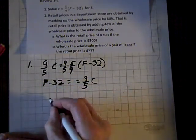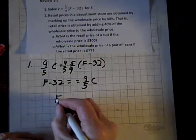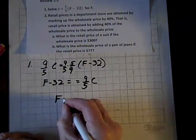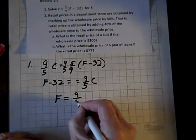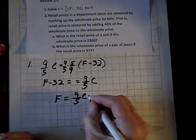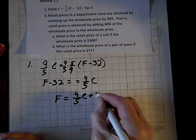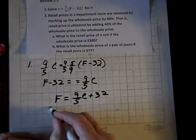Now it only remains to add 32 to both sides, and we get F equals 9 fifths C plus 32, and we've done it.